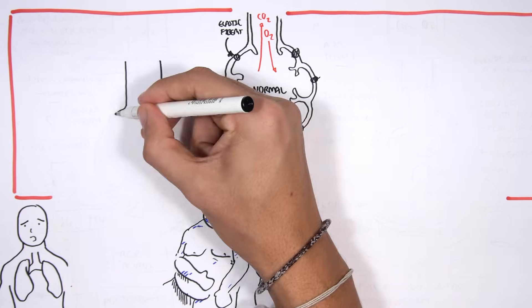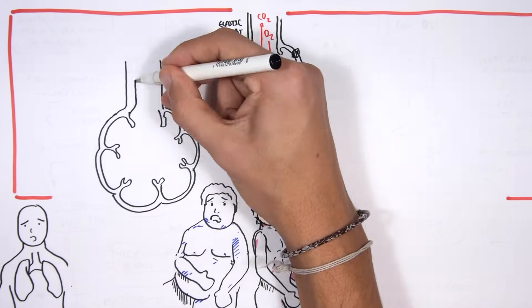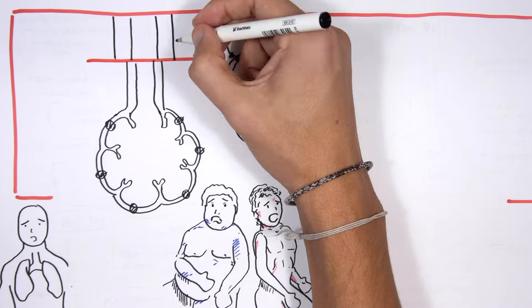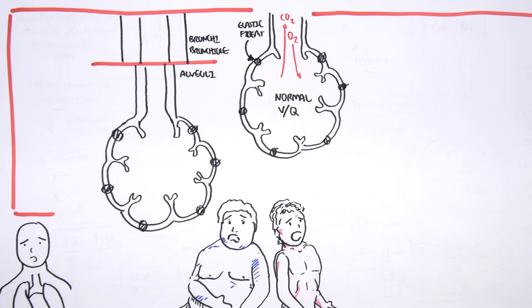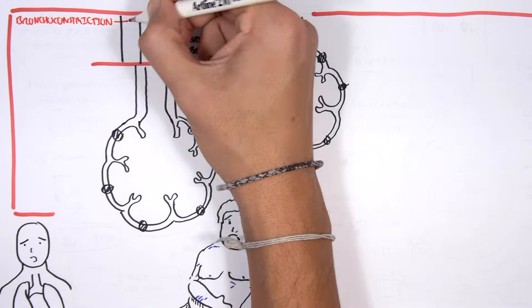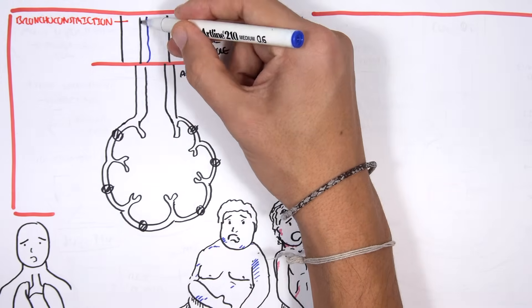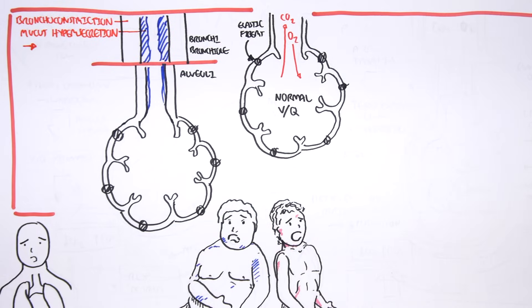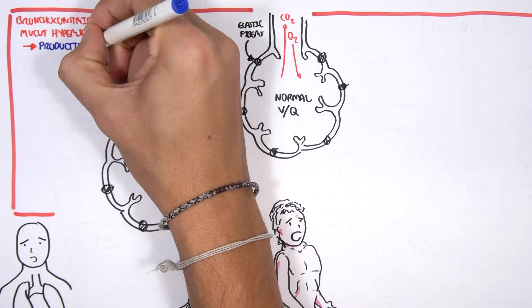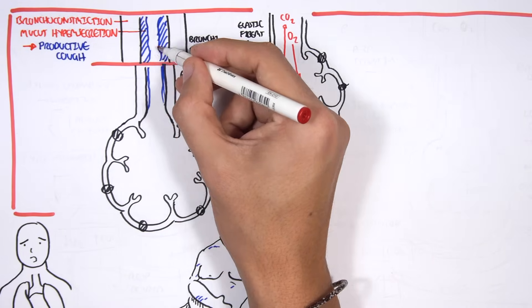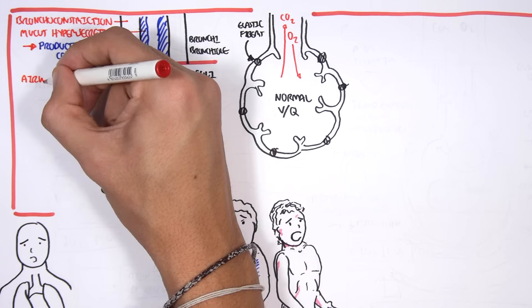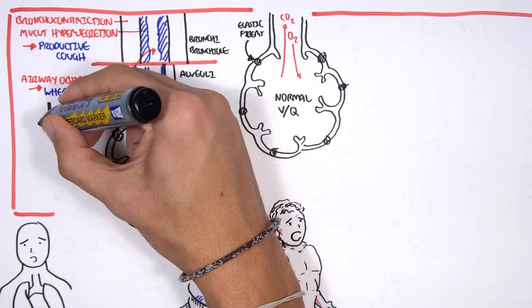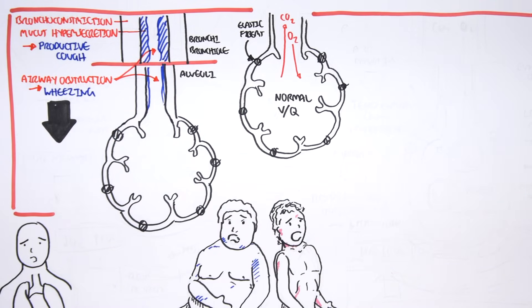Now if we look at an alveoli and the bronchioles of a chronic bronchitis patient, we can see big differences. In the bronchioles and bronchi, we see bronchoconstriction and mucus hypersecretion. The mucus hypersecretion leads to the productive cough in chronic bronchitis. The airways obstruction from bronchoconstriction and mucus leads to wheezing. We hear wheezing during expiration typically.